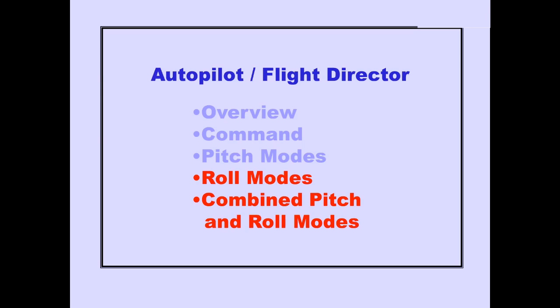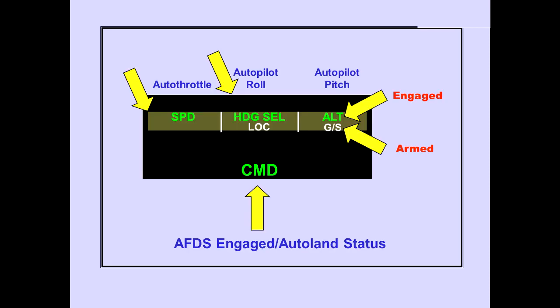In this module, we will discuss the roll modes and the combined pitch and roll modes. First, let's review the flight mode displays. Autothrottle mode is located on the left. Engaged roll and armed roll are located in the center. Engaged pitch and armed pitch are located on the right. The engaged modes are displayed on top in green, and the armed modes are displayed on the bottom in white. The AFDS engaged Autoland status is positioned below the roll mode display.